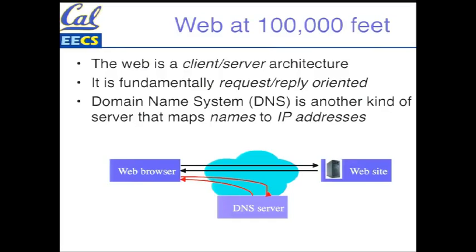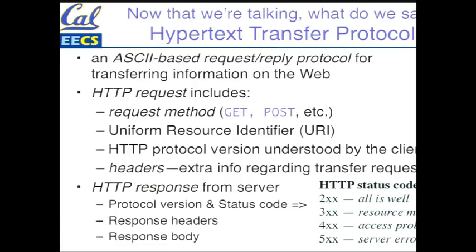Now that we know how to talk to an endpoint, what do we say? We use the hypertext transfer protocol. Just like TCP relies on IP, HTTP relies on TCP — it assumes it can reliably send strings back and forth. The strings are simple ASCII strings that typically begin with a verb like GET or POST, followed by a URI, and often include the HTTP protocol version understood by the client along with some extra headers. The server responds with a protocol version confirmation, a status code, headers, and the body — the actual thing the client asked for.